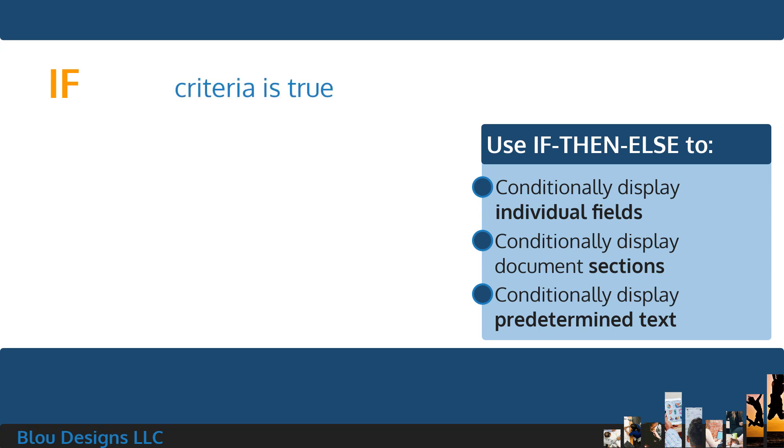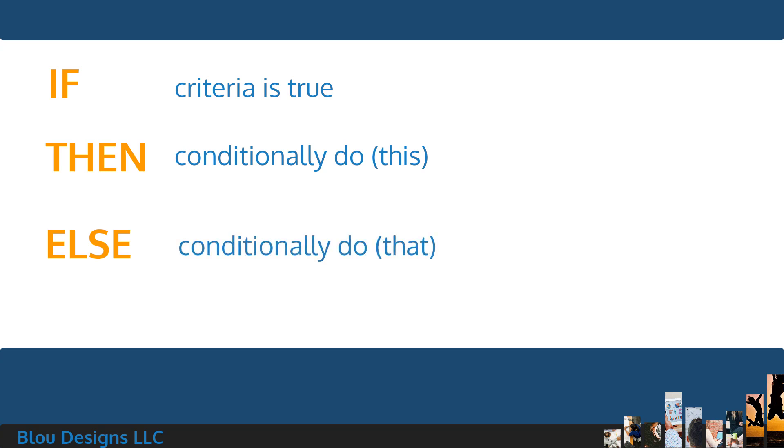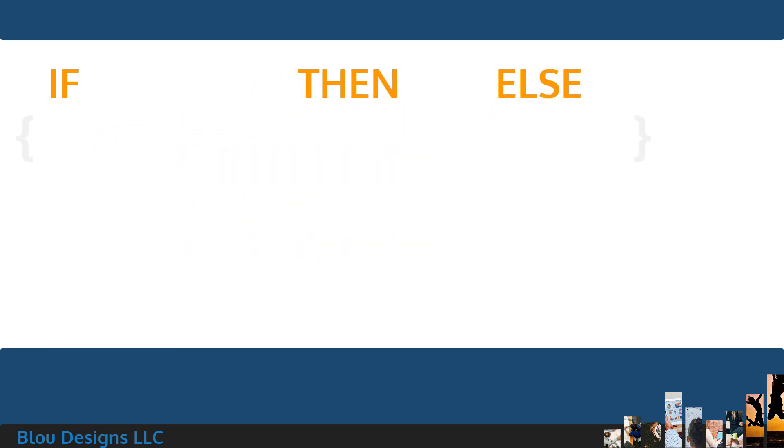If some criteria is true, then do this. Otherwise, or else, do this other thing. In field code view, these types of conditionals follow a standard format. They'll be inside curly braces, and the first thing inside will be the field name if, followed by the expressions you're evaluating, your criteria, followed by something called the true text, which is what you want to do if the expressions evaluate to true. So this is the then part of the if-then-else, followed by something called the false text, which is what you want to do if the expressions evaluate to false. So this is the else part of the if-then-else.